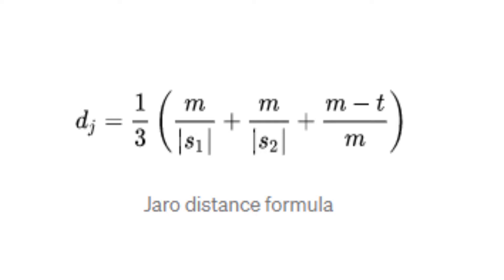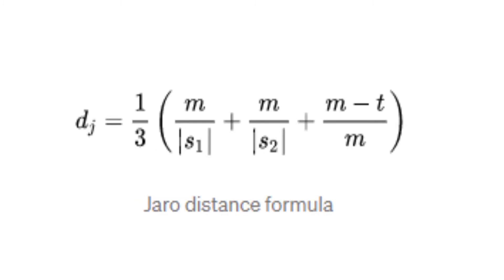In the formula, M stands for the number of characters that appear in both strings. So in the words 'cat' and 'apple', the letter A appears in both, so that would mean plus one to M. T is half the number of transpositions — basically how many characters you have to change from one word to make it into another, divided by two. S1 is how long the first string is, and S2 is how long the second string is. So if you plug your data into this formula, you get the Jaro distance.